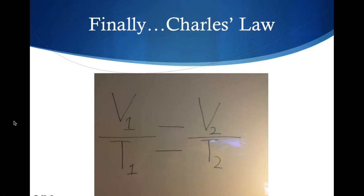So after we analyze those relationships and those facts, we finally conclude Charles' Law, which is V1 over T1 is equal to V2 over T2. You can also read this as the initial volume divided by the initial temperature is equal to the final volume over the final temperature.